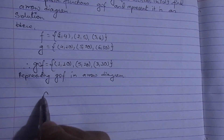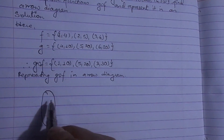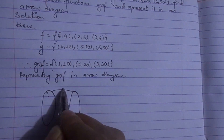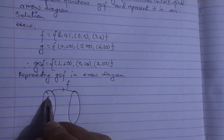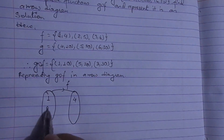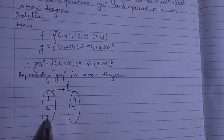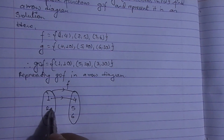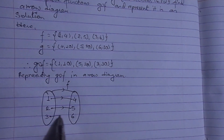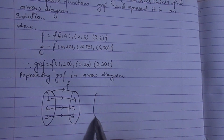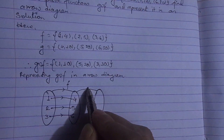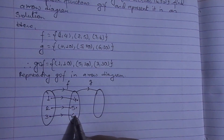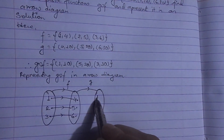For the arrow diagram, first we write the elements of f. This function f means 1 is linked with 4, 2 is linked with 5, 3 is linked with 6. We need to show 1 to 4, 2 to 5, 3 to 6. Similarly, function g: 4 is linked with 10.